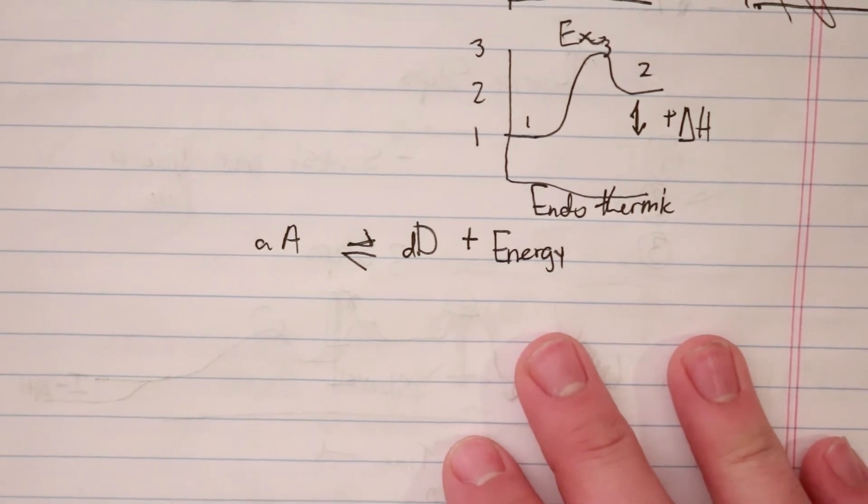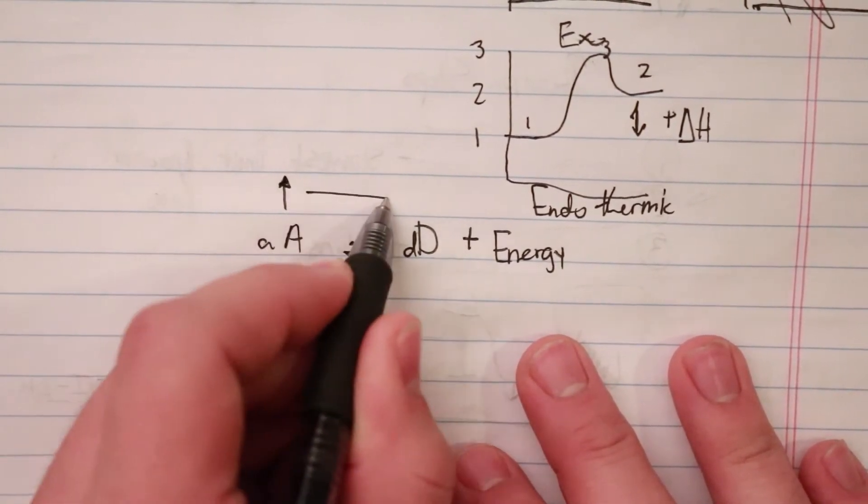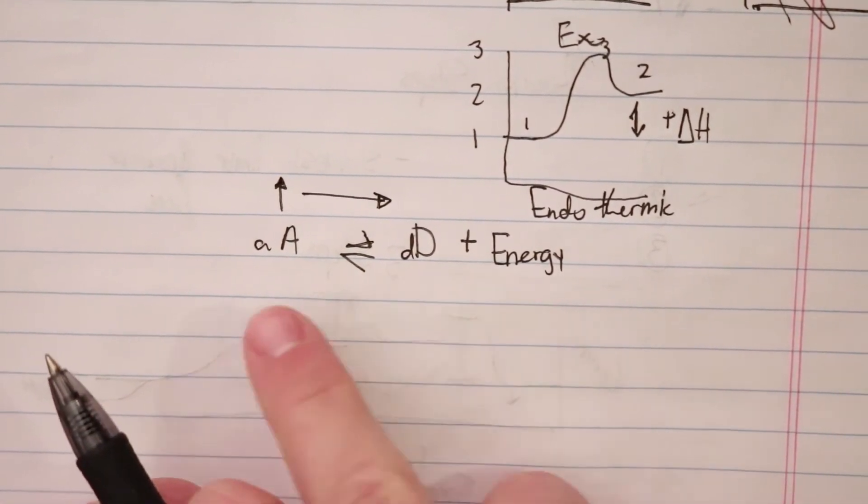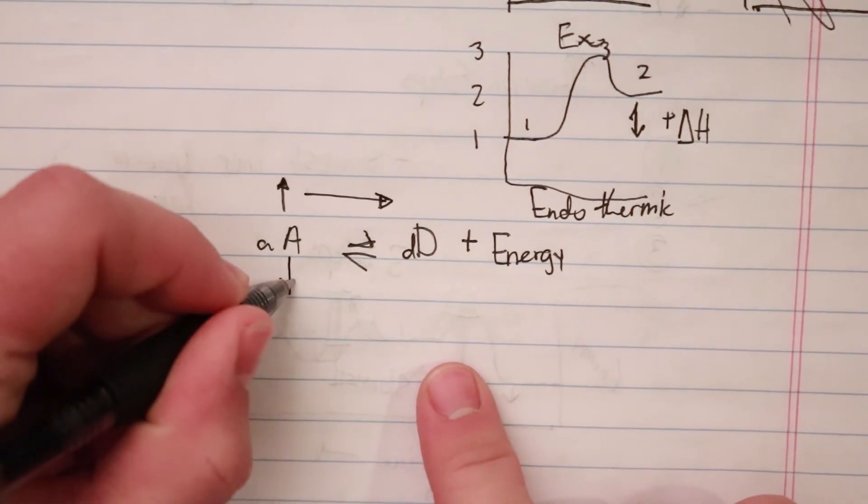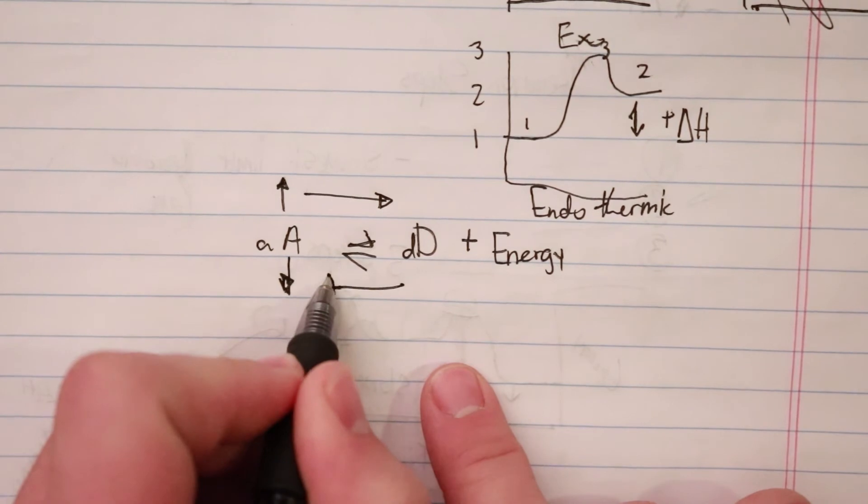When we look at these equilibrium problems, if we add on one side, it will favor the reaction to reach equilibrium again. Where we increase concentration, it will favor that direction, or if we decrease the concentration, it will want to go back to the other side.